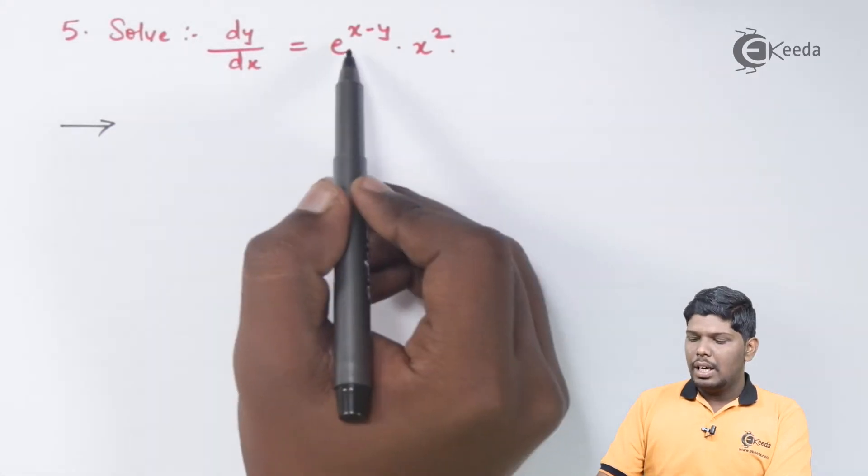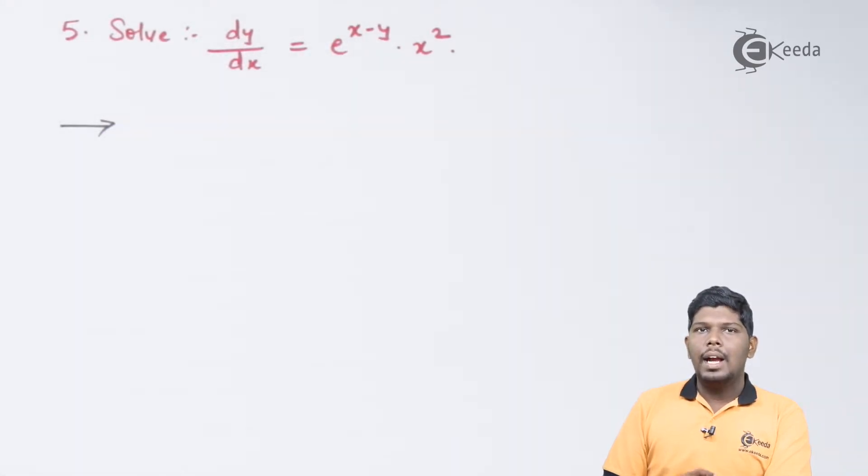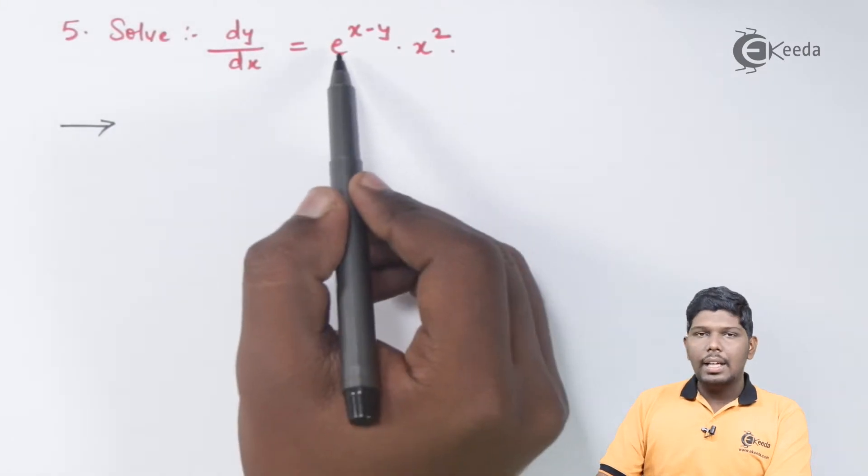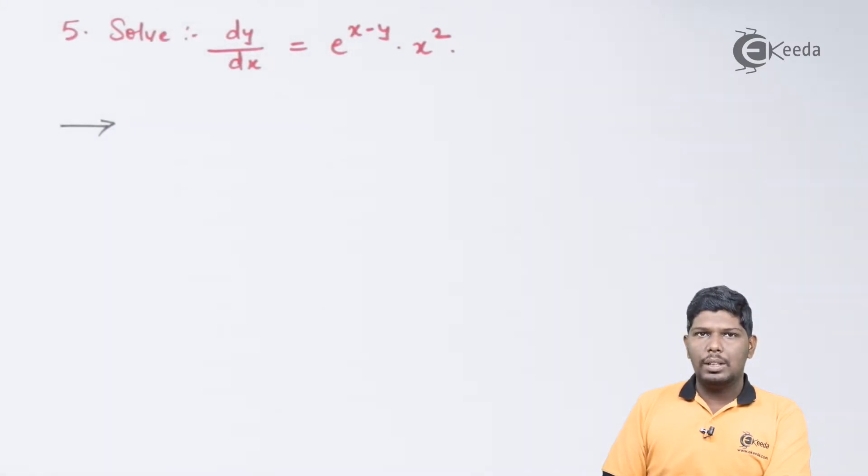Now, to separate variables, first, I need to separate x and y and that can be done by writing it as e raised to x into e raised to minus y.